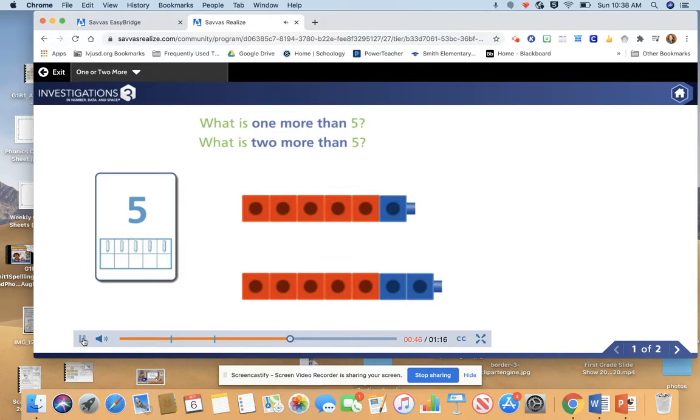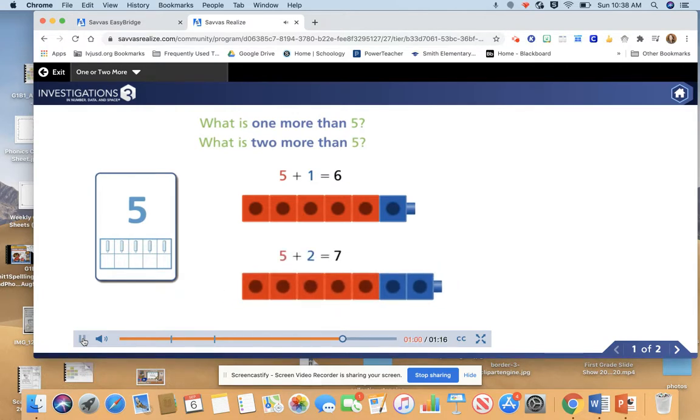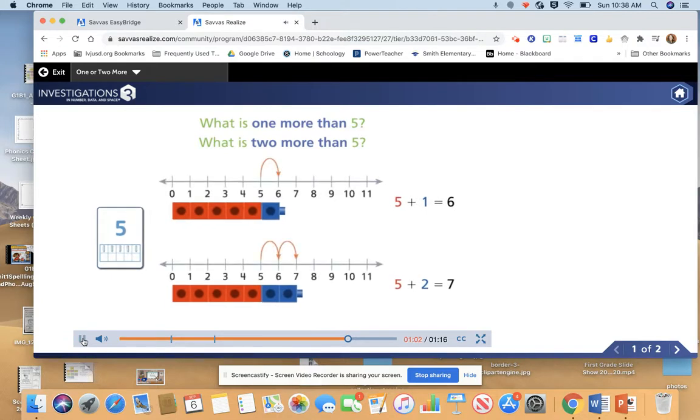I can show one more with an equation. When I add one to five, the total is six. I can also show two more with an equation. When I add two to five, the total is seven. I can show one or two more on the number line with cubes and with equations.